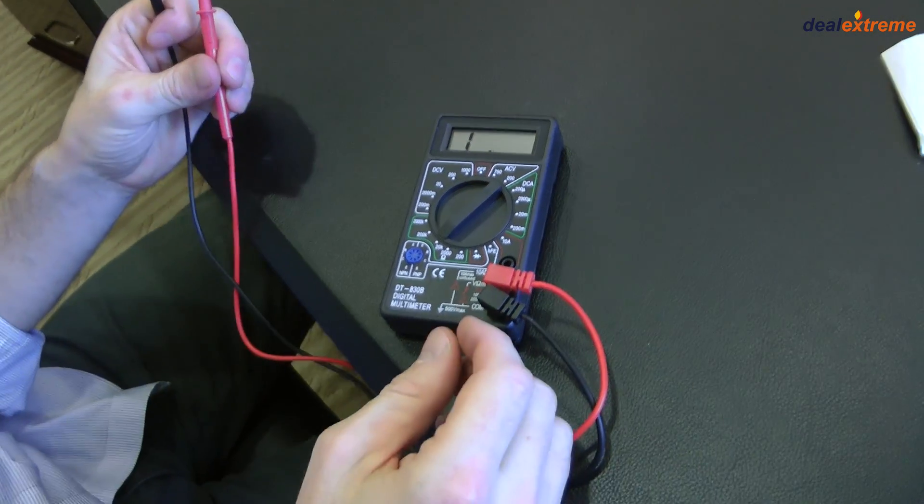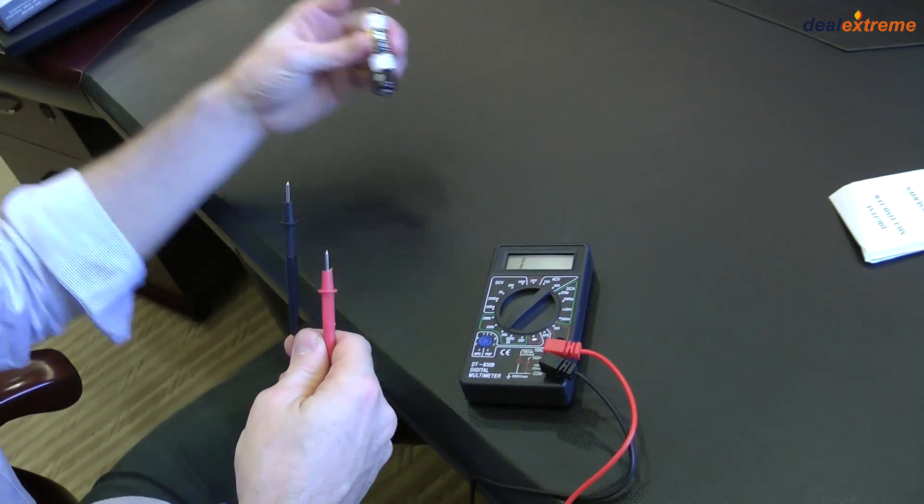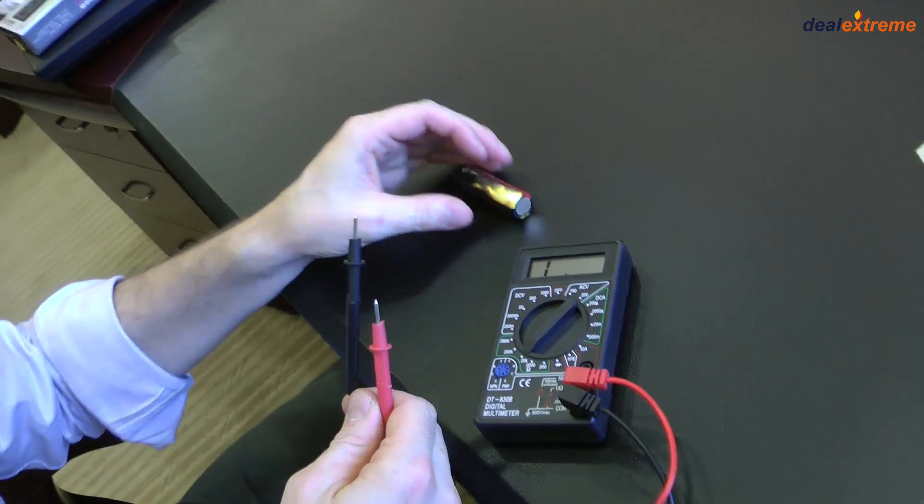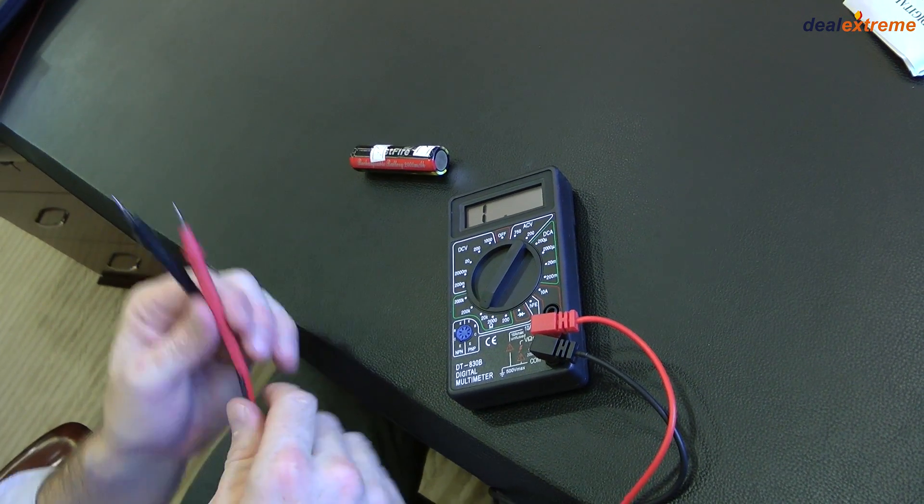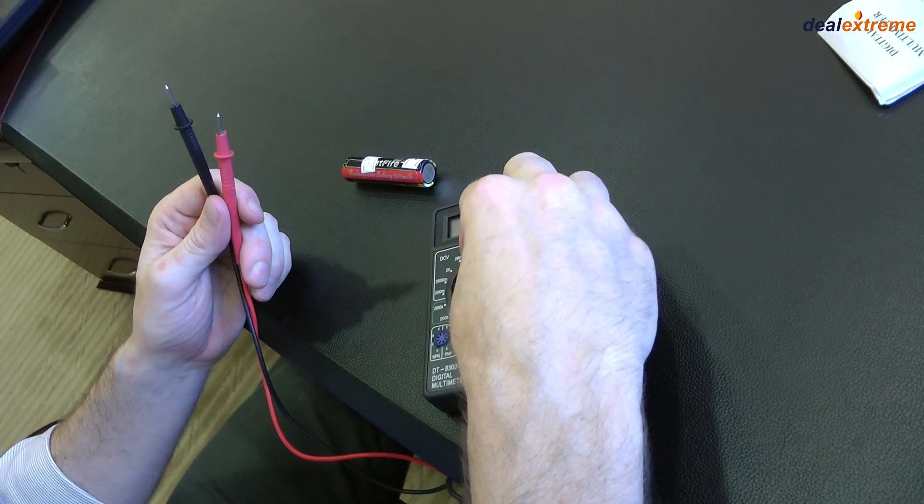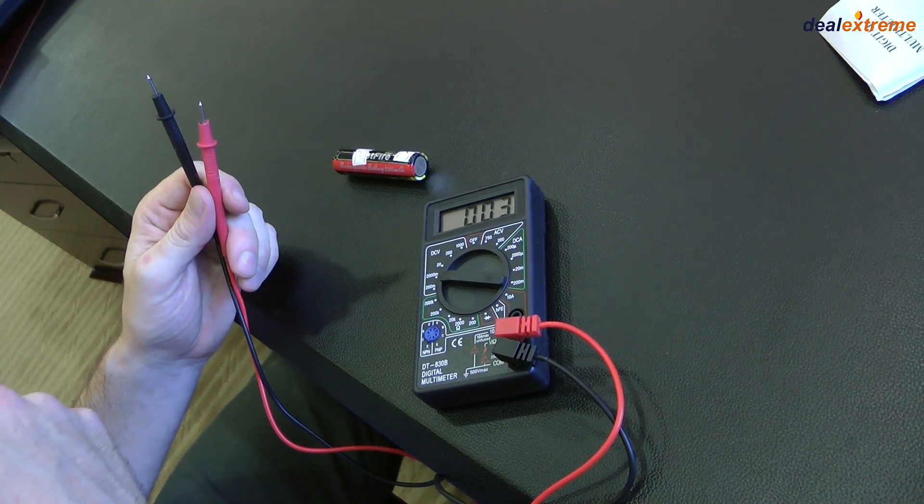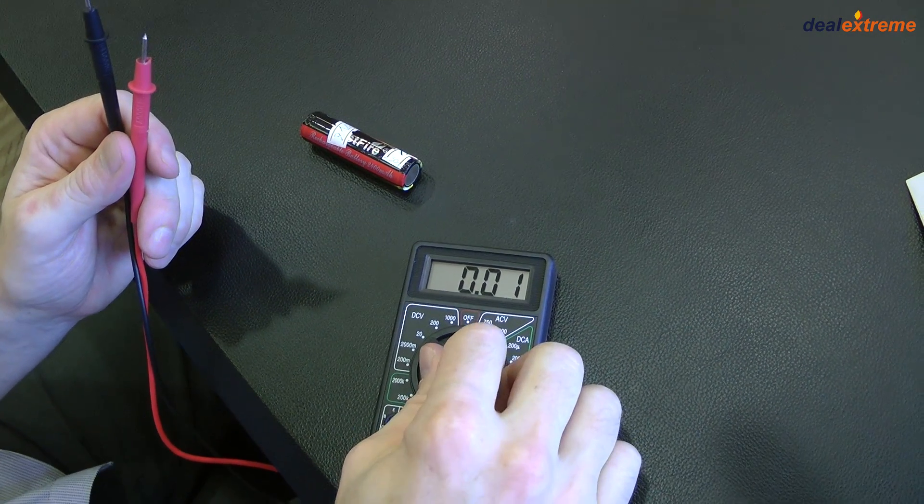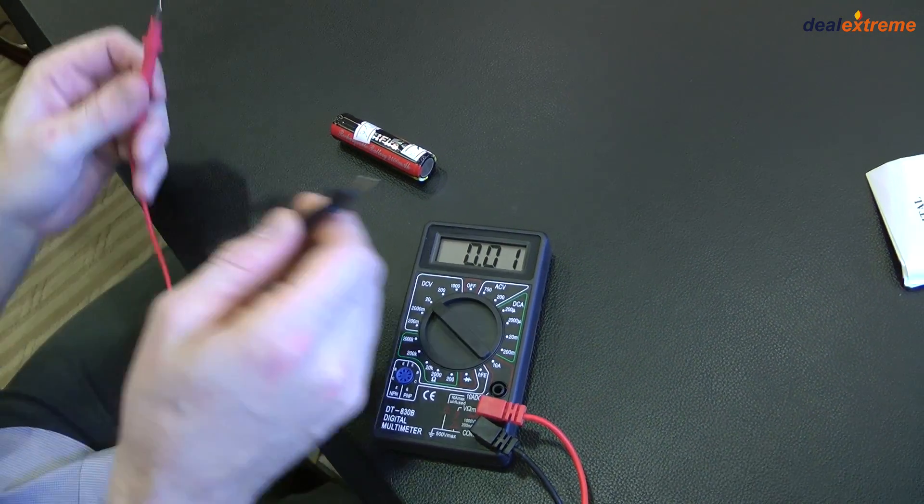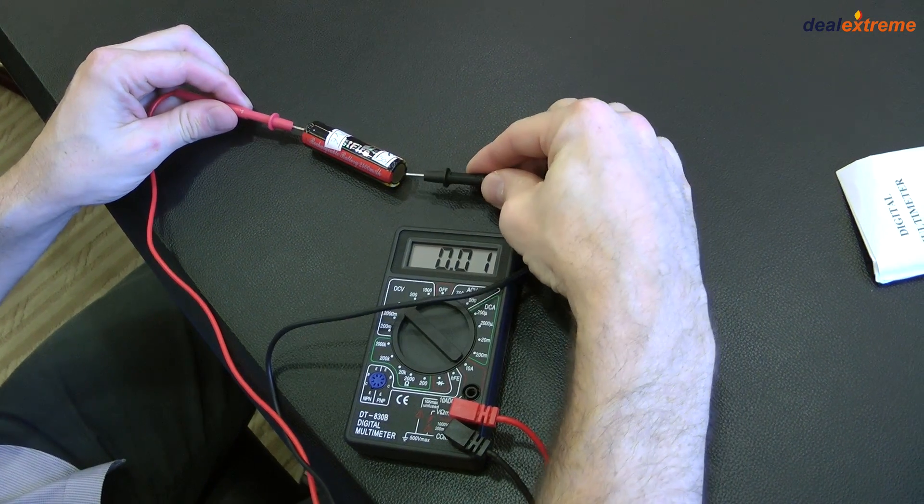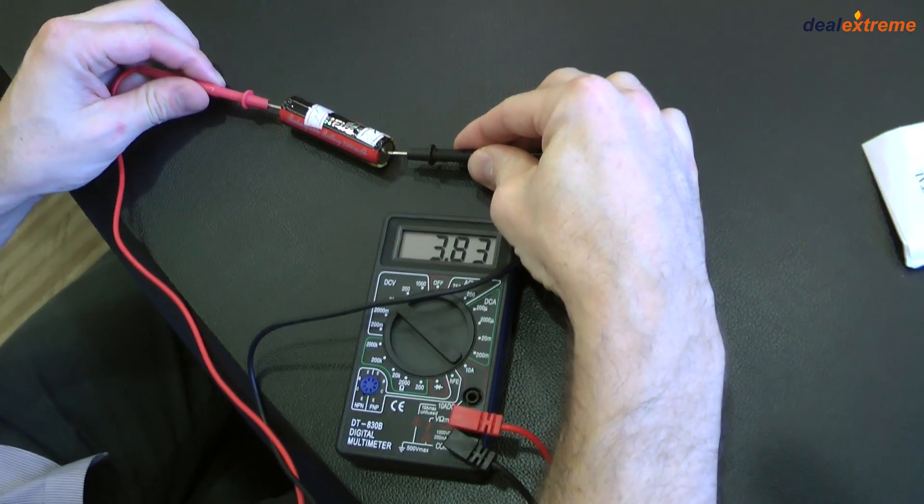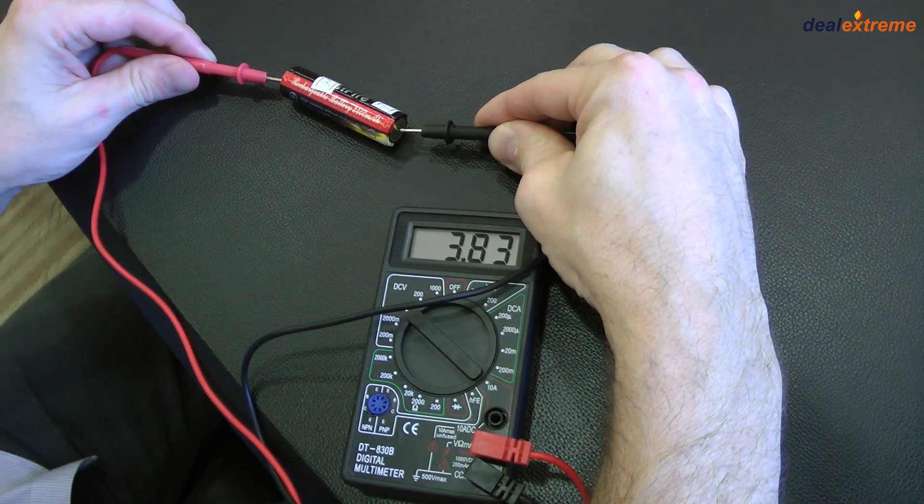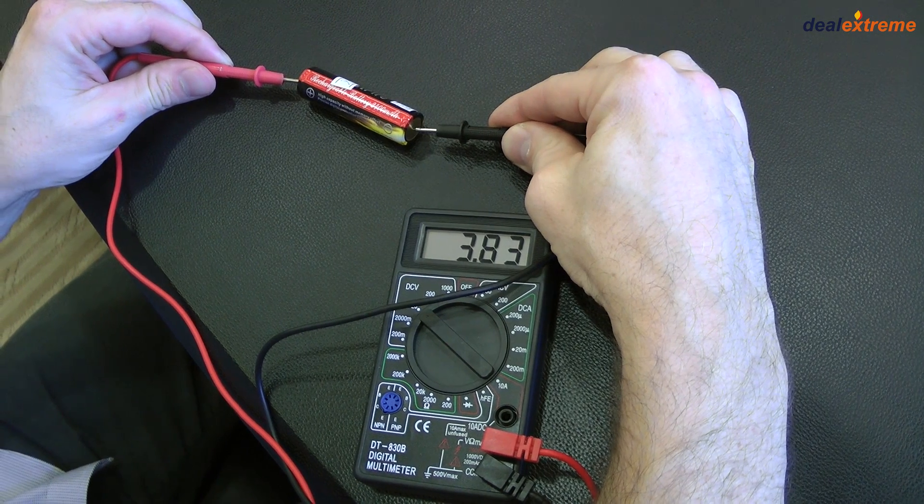Let me grab a battery, standard 18650 rechargeable flashlight battery, and we'll do a direct current voltage test on this, just so you see how it works. We'll switch to direct current, and we'll select a range, and I'll select 20, and we'll check it out with the leads. And as you can see we have a 3.8 on that charged battery.